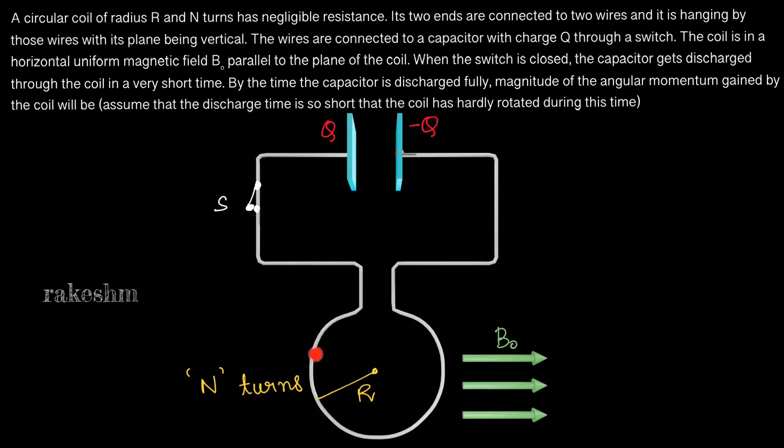So we need to find the angular momentum gained by this coil when the capacitor has discharged. Note that the discharge time is very short, which means the current goes very fast through this coil. I have drawn it slowly so you can visualize properly, but the discharge time is very short and the charge travels very fast through this coil.